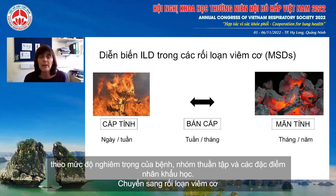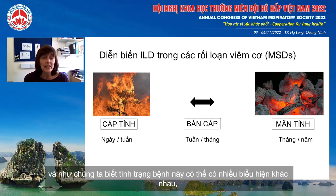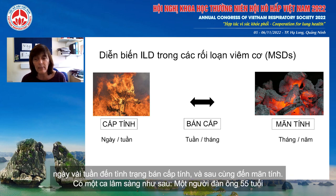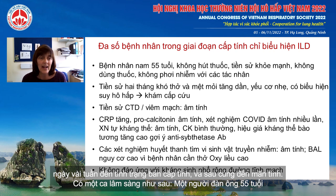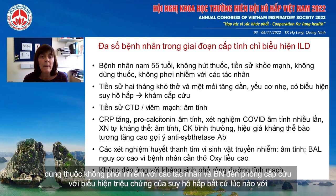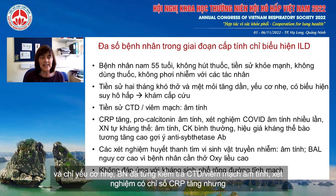Moving on to the myositis spectrum disorders, these can have a wide range of presentation, ranging from acute — presenting with life-threatening disease over the course of only a few days or weeks — to subacute, to chronic. As an example, this 55-year-old man, a non-smoker, had always been well with no drugs or exposures. He presented in respiratory failure at A&E with two months of progressive breathlessness and fatigue and only mild muscle weakness.